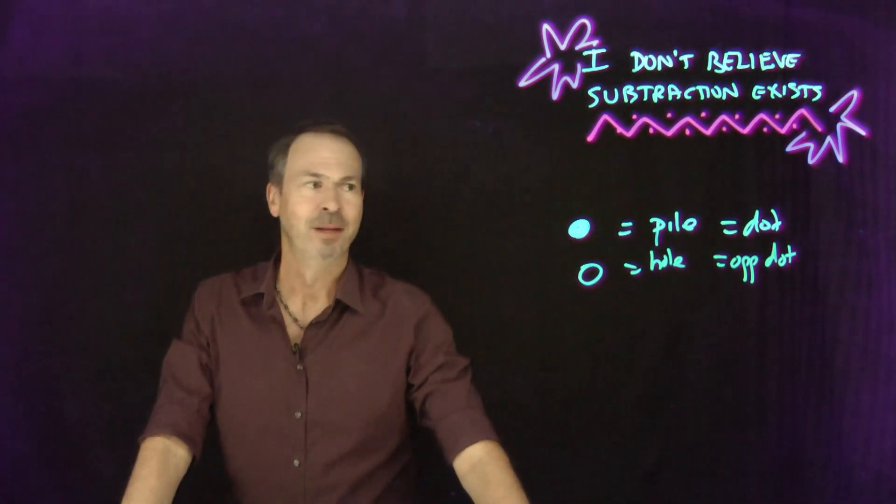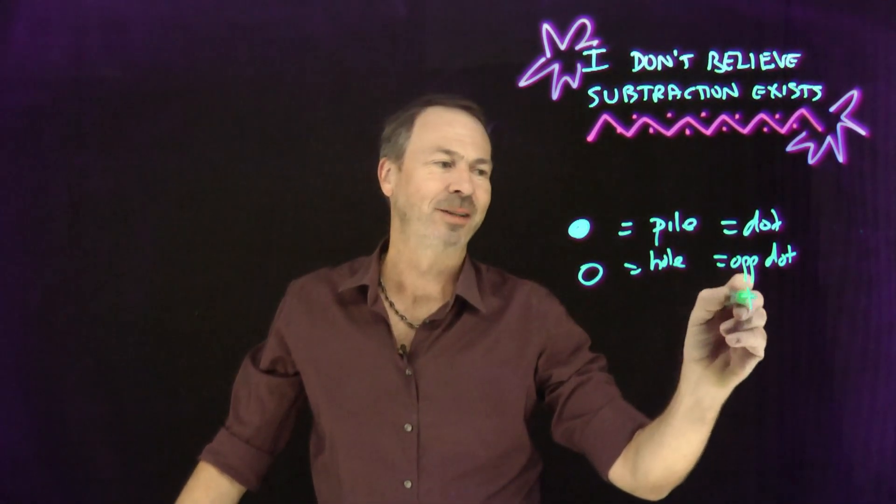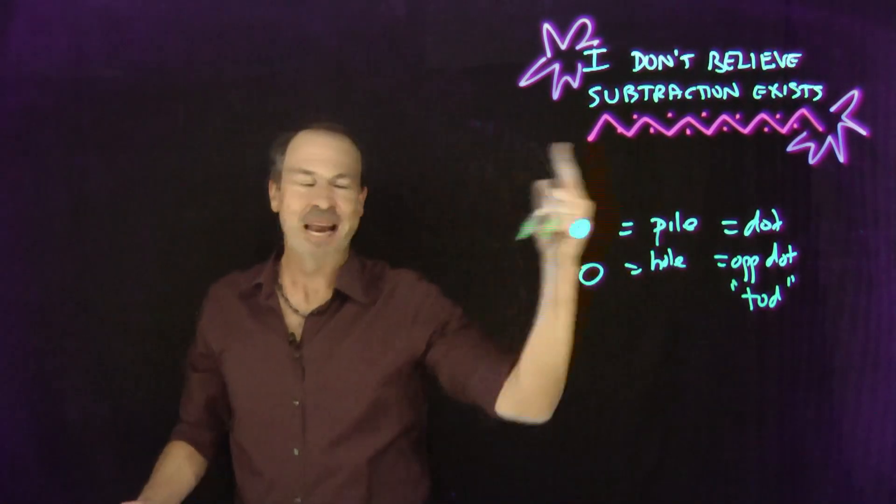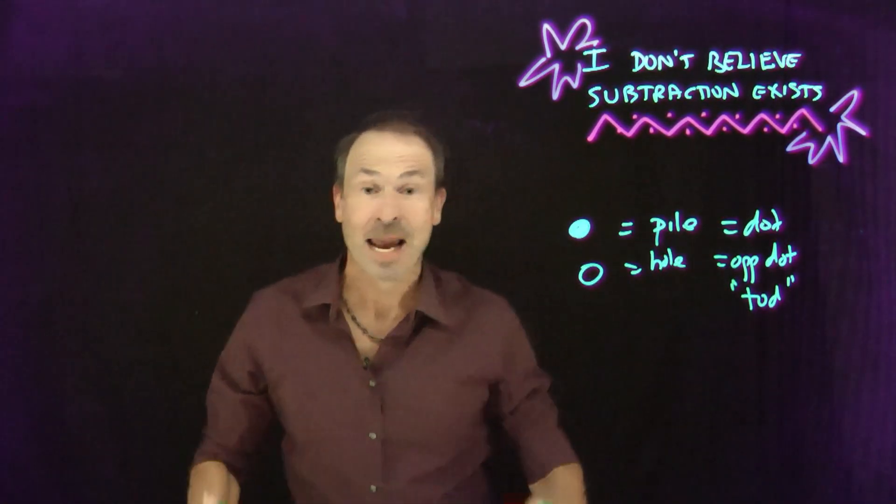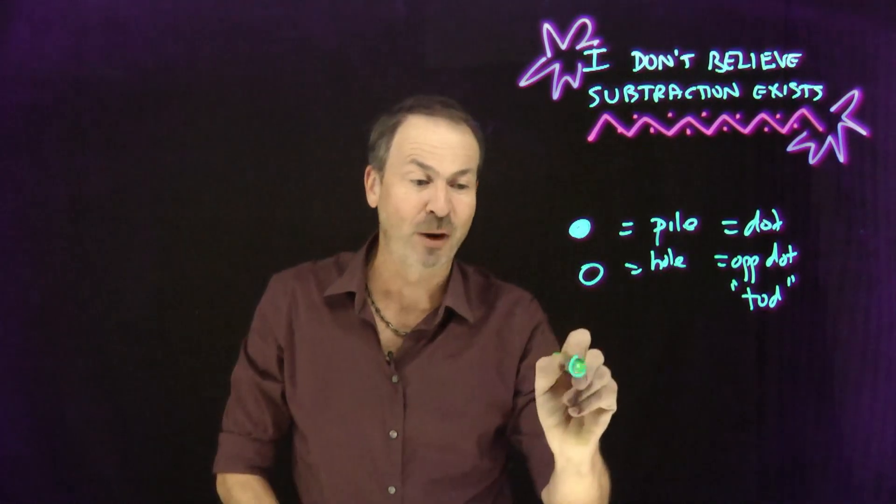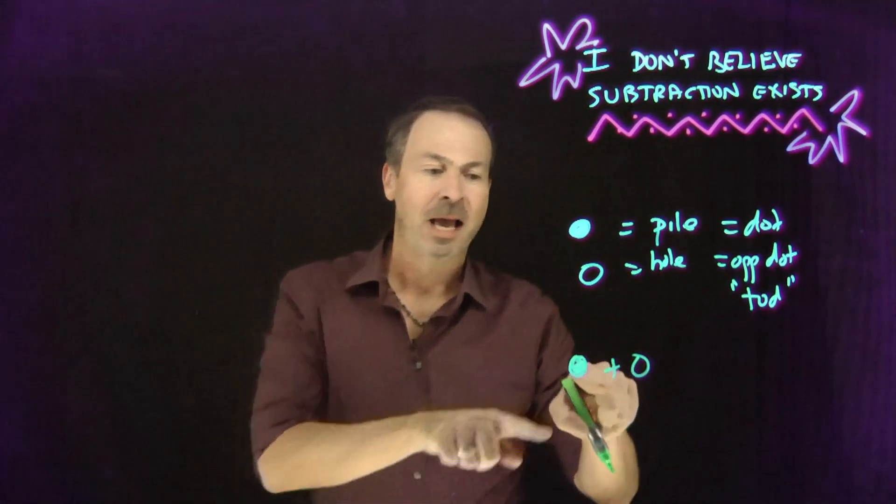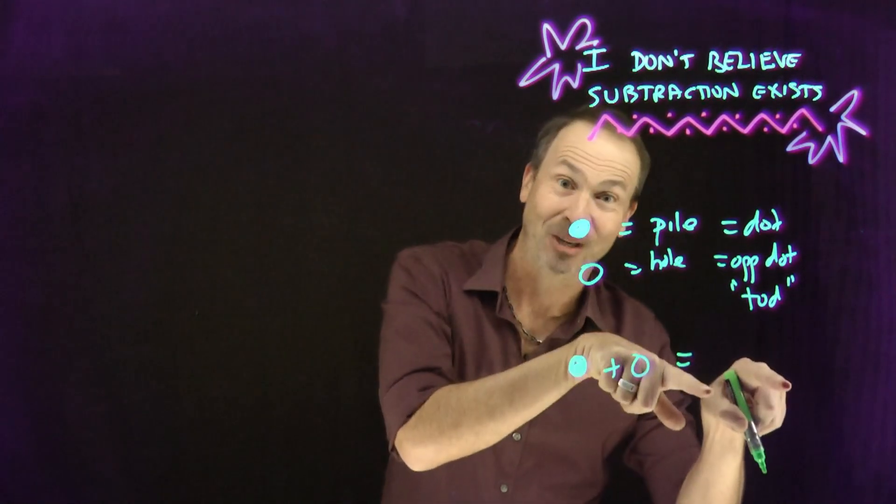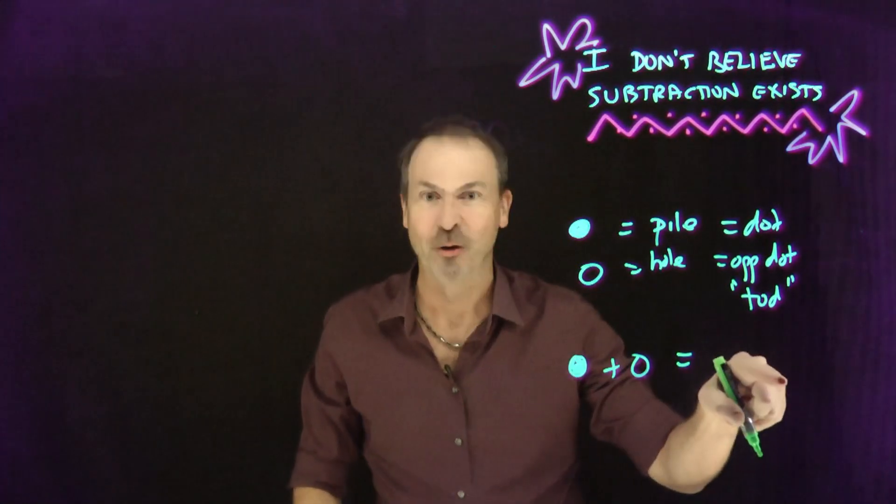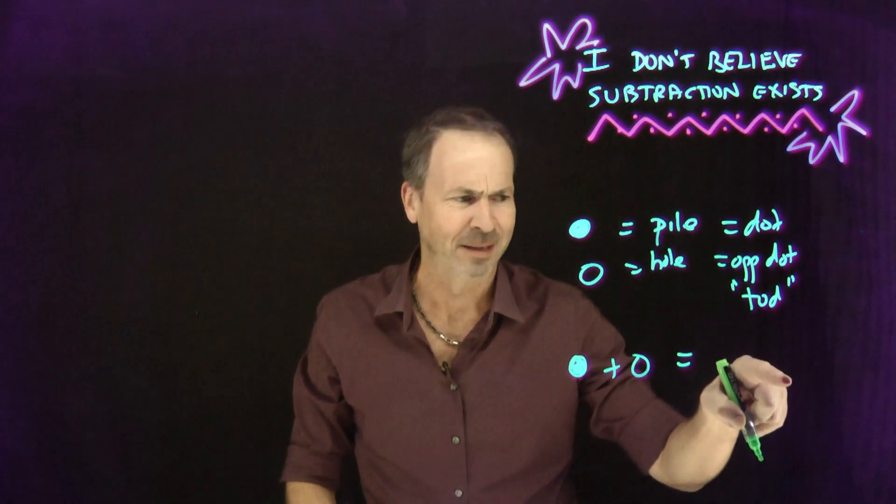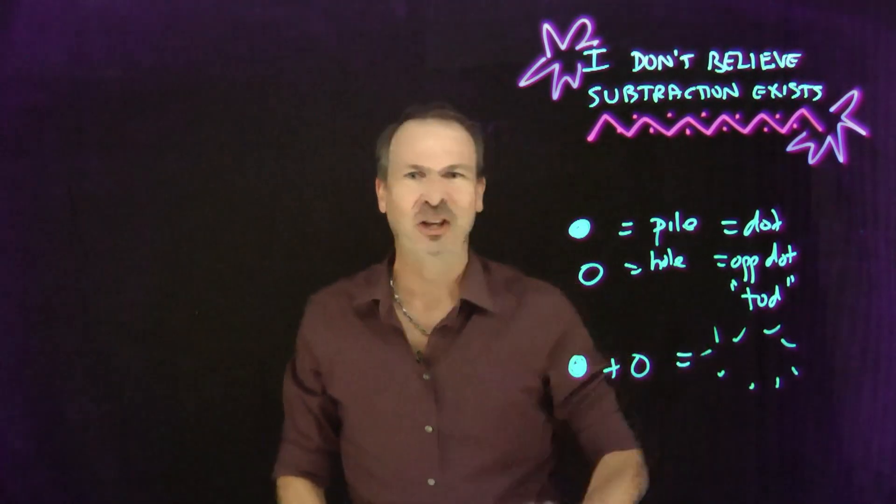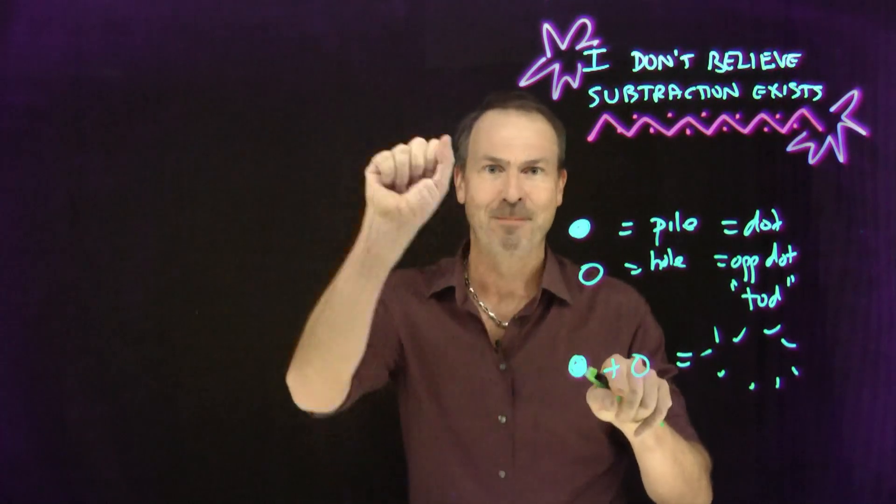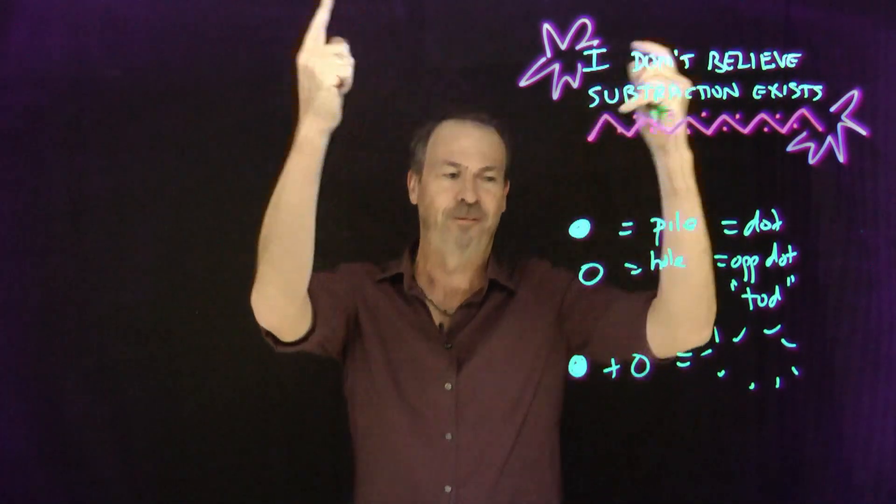The opposite of a dot. An anti-dot. Actually, kids like to call the opposite of a dot a tod. I really like tod. Dot backwards. Anyhow, so the opposite of a dot, an anti-dot, a tod, whatever you want to call it. And again, a pile and a hole. If I bring a pile with a hole, the pile fills up the hole. I'm left with that picture. Nothing. I don't know how to draw nothing. They annihilate each other. A pile and a hole undo each other. Maybe like science fiction, matter and anti-matter. Bring them together. Poof. I've got nothing.